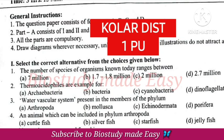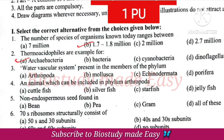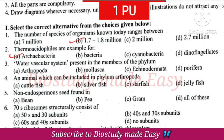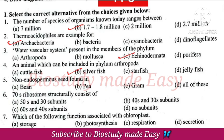First question. Number of species of organisms known today ranges between 1.7 to 1.8 million. Thermoacidophiles are an example of Archaebacteria. Water vascular system controls the Echinoderm. Arthropoda includes silver fish.